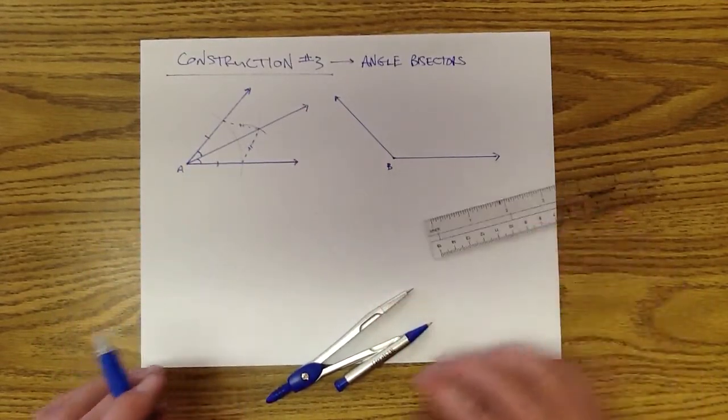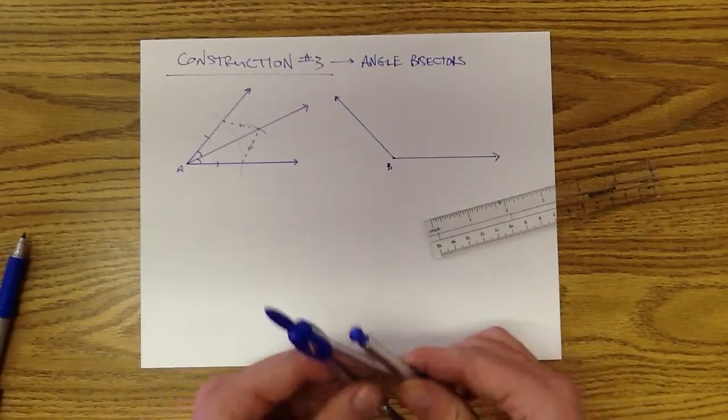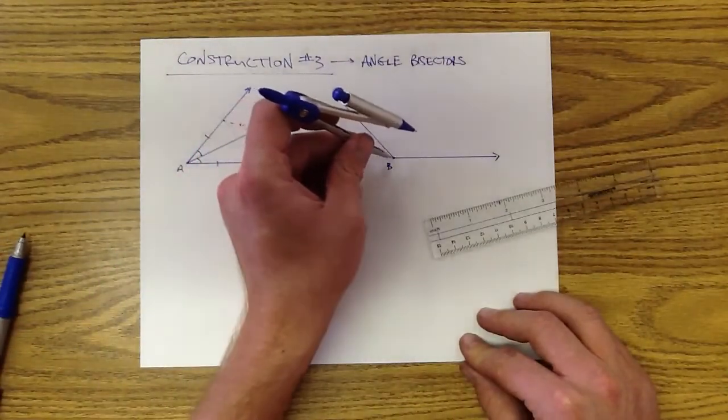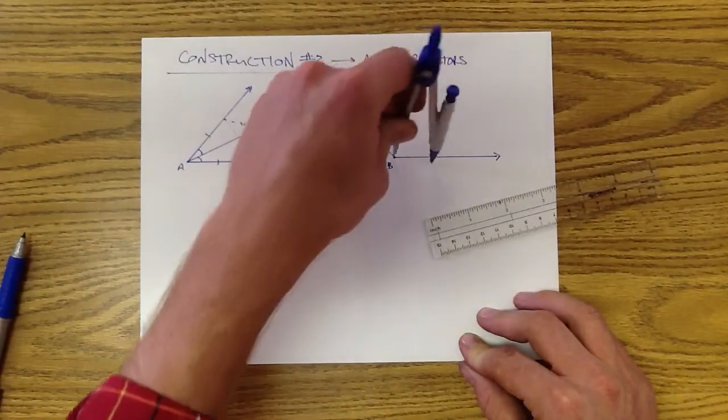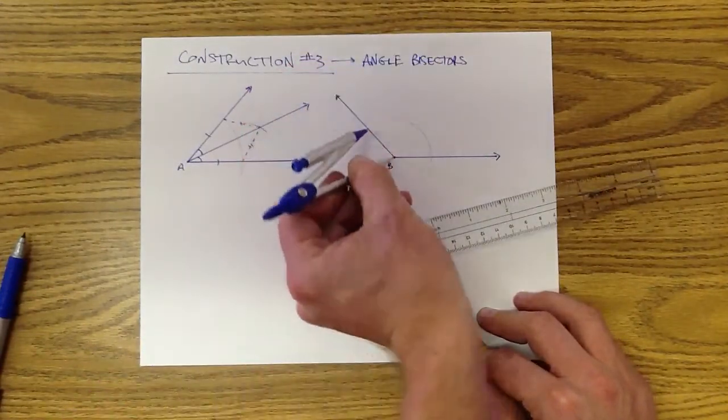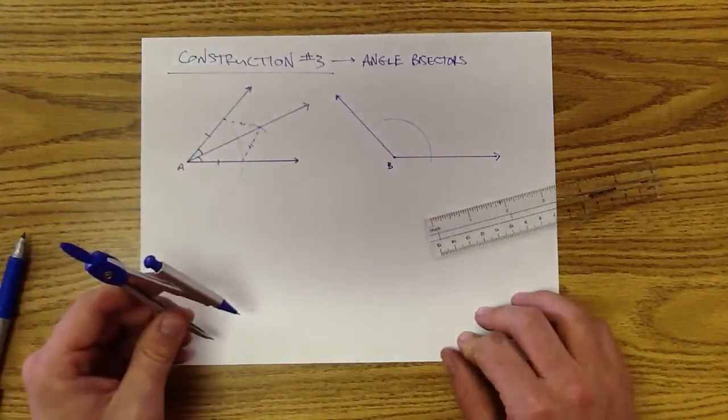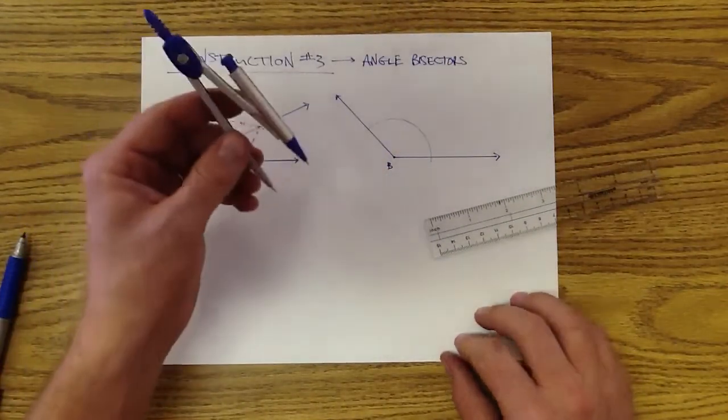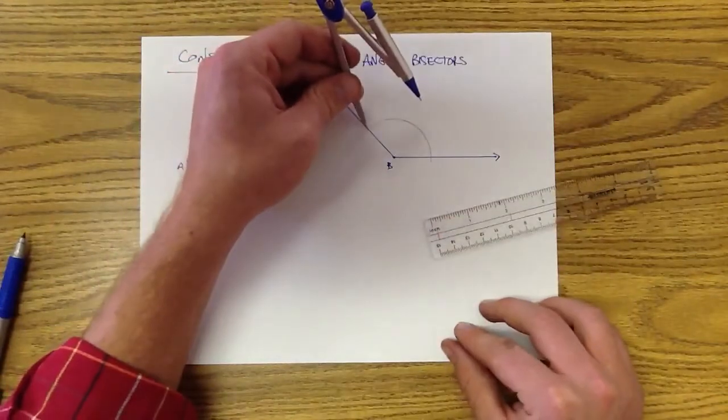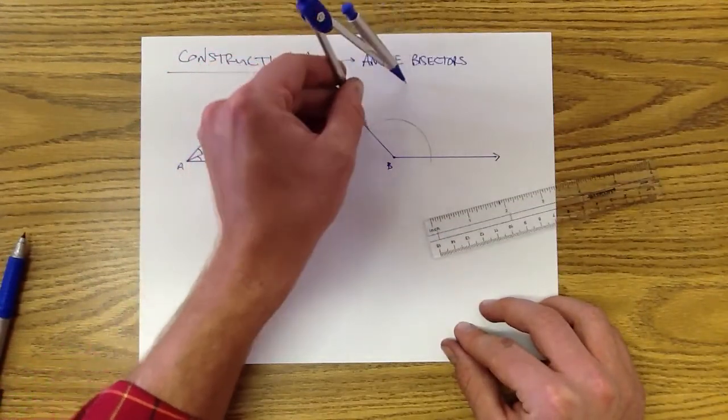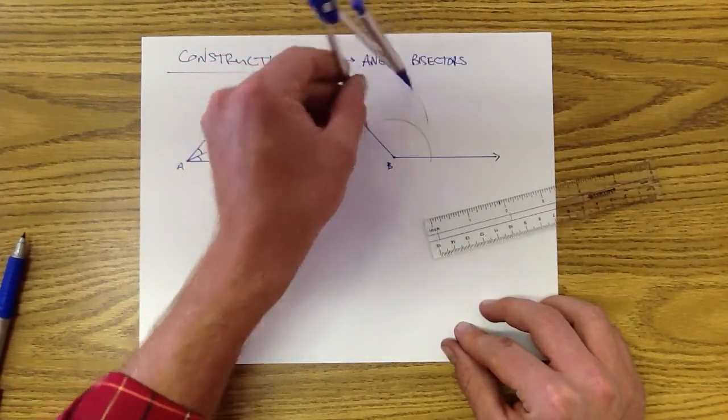So with that said, let's go through and look at this obtuse angle B. Same exact process. Pick an arbitrary compass length. Use that to strike an arc through both sides of your angle. Next, pick a distance that's a little over half way.